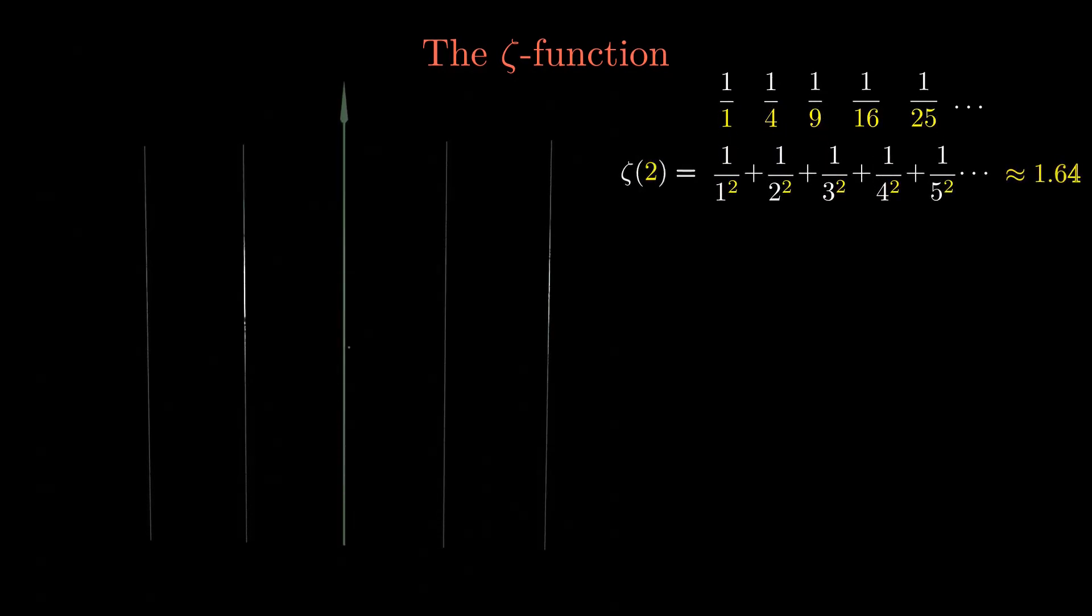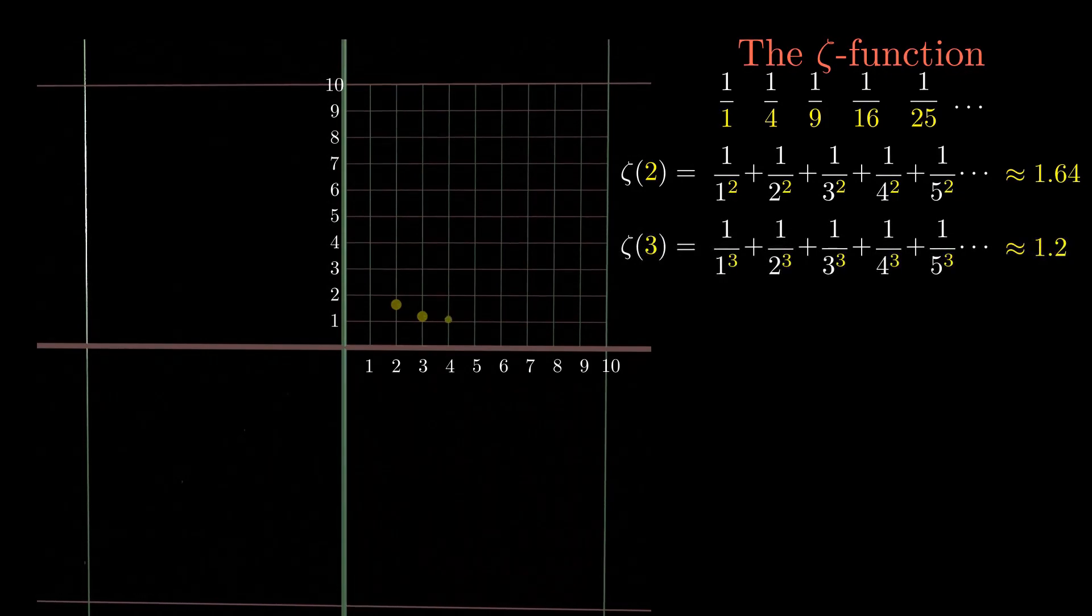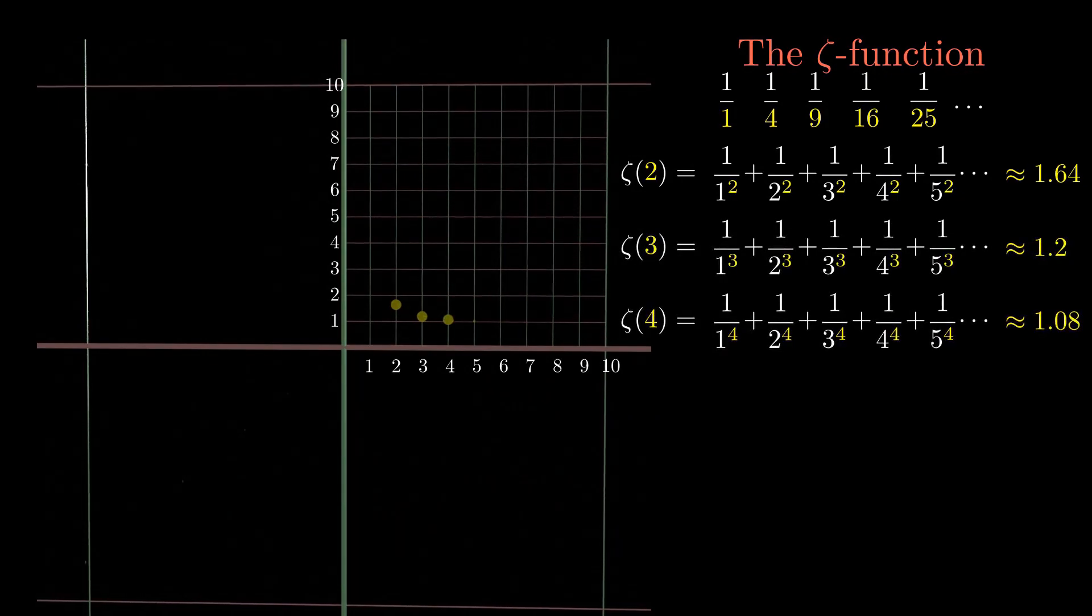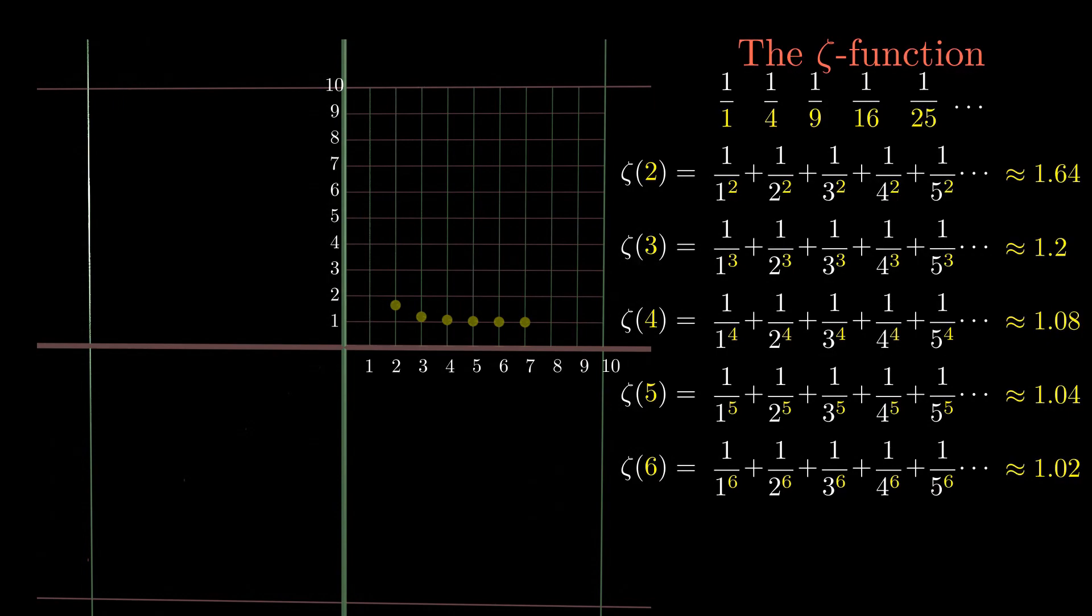The basic definition of zeta is easy to understand. Consider the series of square numbers first, then take the reciprocal values and add all of them together. This gives the value of the zeta function at 2. Similarly, the value of zeta at 3 can be calculated from the sum of the inverses of all cubic numbers and so on. For large input values, zeta approaches 1. The first term is the only significant contribution, all other terms become negligible. In principle, zeta can also be calculated for non-integer exponents. These values smoothly interpolate the values for integer arguments.